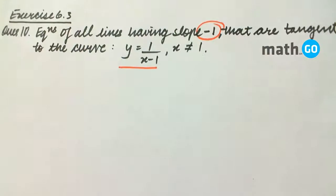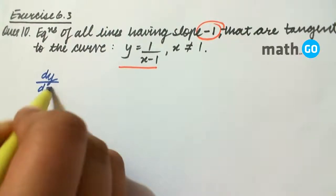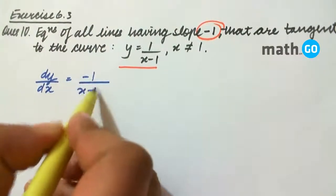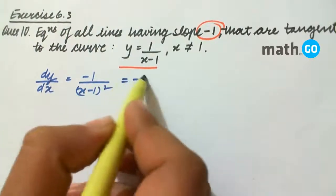First, we will find the slope of the tangents to the curve. That will be dy/dx = -1/(x-1)². Now this is given to be -1.